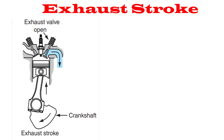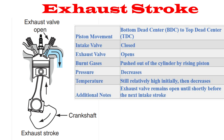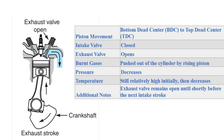Exhaust Stroke: As the piston nears BDC on the power stroke, the exhaust valve opens, allowing the spent gases to escape. Because the burning gases are still expanding, they are forced out through the open exhaust valve. As the crankshaft continues to turn past BDC, the piston moves up in the cylinder, helping to push the remaining exhaust gases out through the open exhaust valve. A few degrees after the piston passes TDC, the exhaust valve closes. The entire four-stroke cycle then repeats itself, starting again as the piston moves down on the intake stroke.